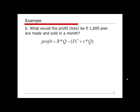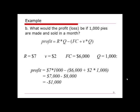Profit equals revenue minus cost, where cost includes fixed cost and variable cost. Revenue is seven dollars per pie, variable cost is two dollars per pie, fixed cost is six thousand dollars per month, and the production quantity is one thousand. Substituting everything into the formula, the profit is negative one thousand dollars, meaning we lose one thousand dollars per month.